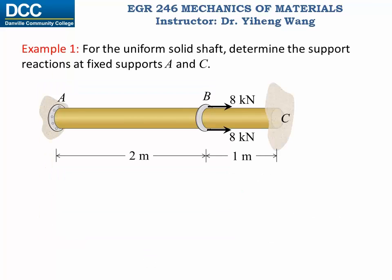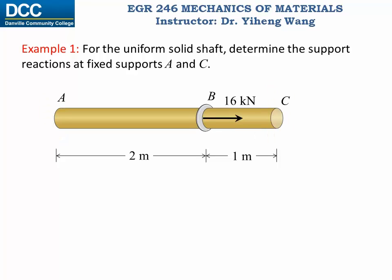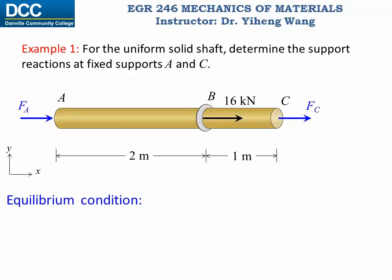Let's look at this example. For this uniform solid shaft, both ends A and C are fixed, and it is subjected to an applied force at point B of 8 kN plus 8 kN, and we need to determine the support reactions at supports A and C. Based on what we've learned in the statics course, we will first draw the free body diagram of this solid shaft in an established x-y coordinate system, and draw the unknown external support forces at point A and point C.